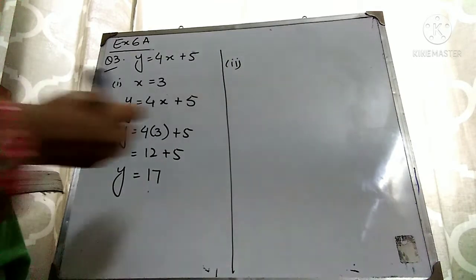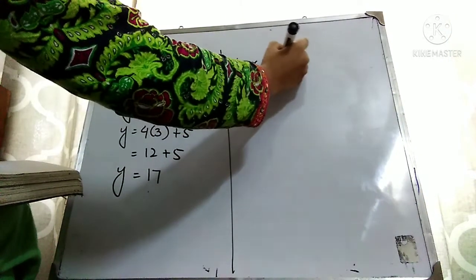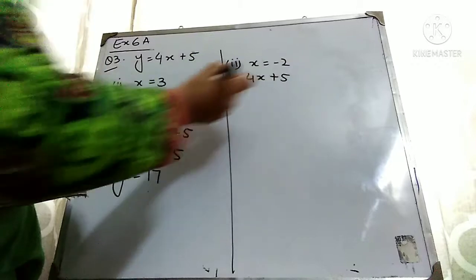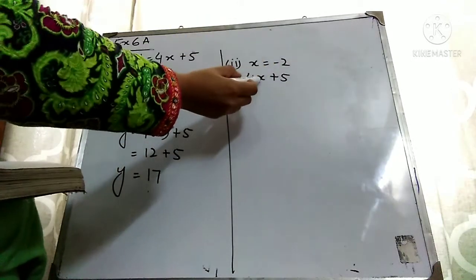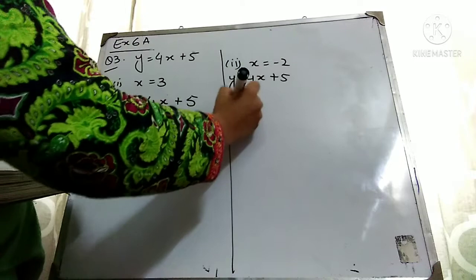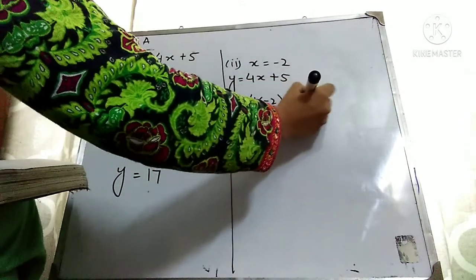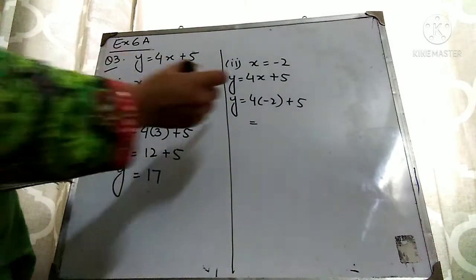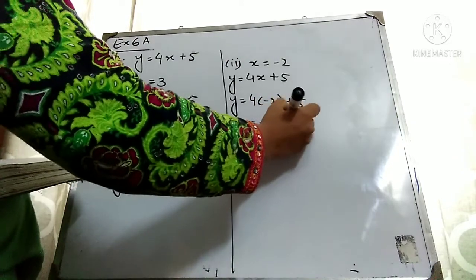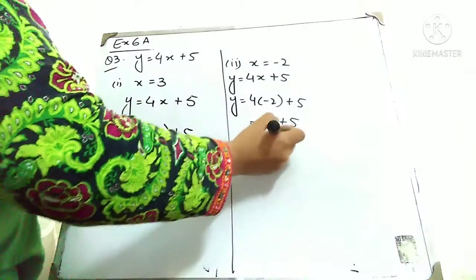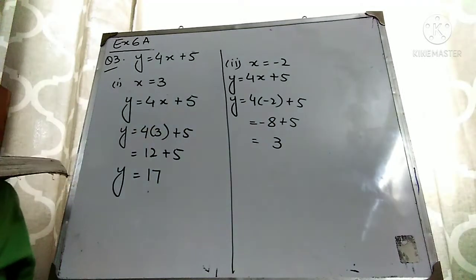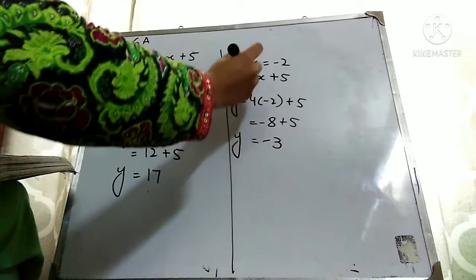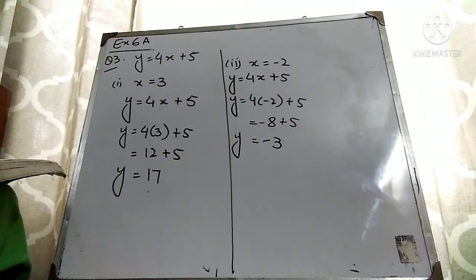The second part is x equals minus 2. The equation is y equals 4x plus 5. Put the value of x which is minus 2. Four 2s are 8, and plus times minus is minus. So minus 8 plus 5. When you subtract 5 from 8 you get 3, and the sign of the bigger number is minus. So when x equals minus 2, the value of y is minus 3.